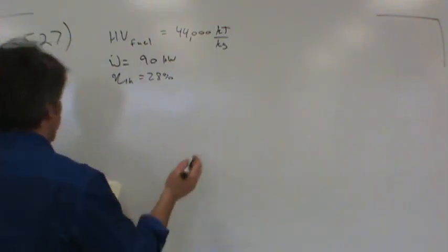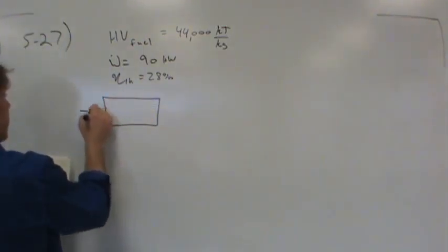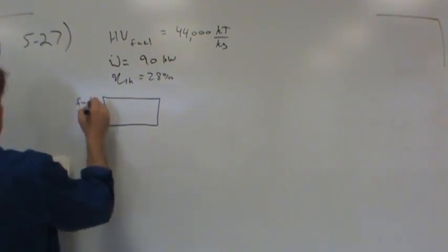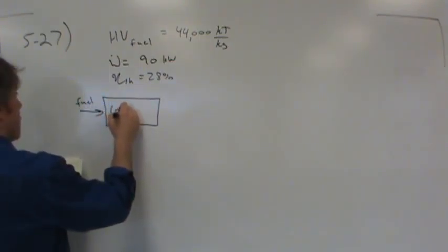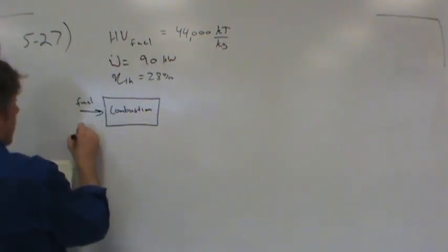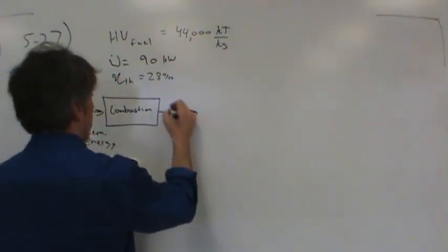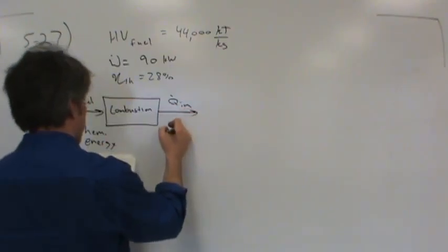So let's draw a block diagram of what's going on so that we can understand this. Basically what happens is we put fuel into the engine, combustion takes place, and chemical energy is transformed into thermal energy.